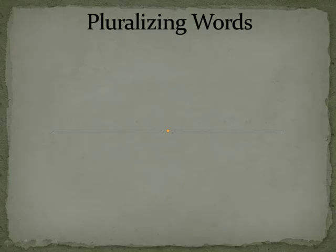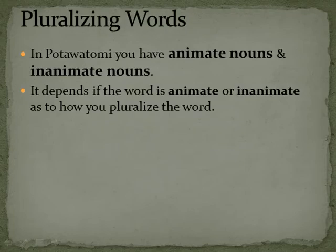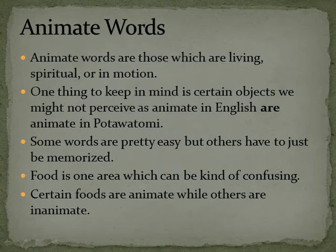Pluralizing Words in Pottawatomie. In Pottawatomie you have animate nouns and inanimate nouns. It depends if the word is animate or inanimate as to how you pluralize the word. Animate words are those which are living, spiritual, or in motion. One thing to keep in mind is certain objects we might not perceive as animate in English are animate in Pottawatomie — some words are pretty easy but others have to just be memorized.